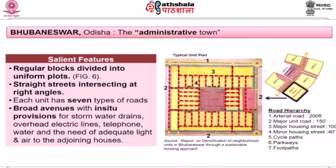The road hierarchy planned for the city was: number one — arterial road at about 200 feet; number two — major unit road at about 150 feet; number three — major housing street at about 100 feet; number four — minor housing street at 40 feet; number five — cycle paths; number six — parkways; and number seven — footpaths. This is the road hierarchy which was planned for the city.